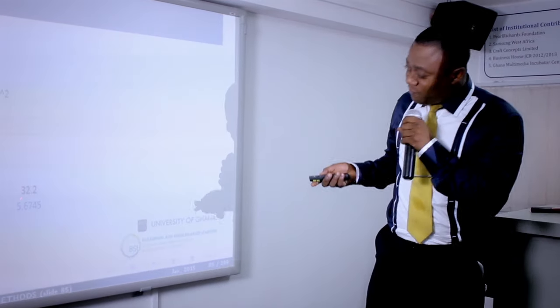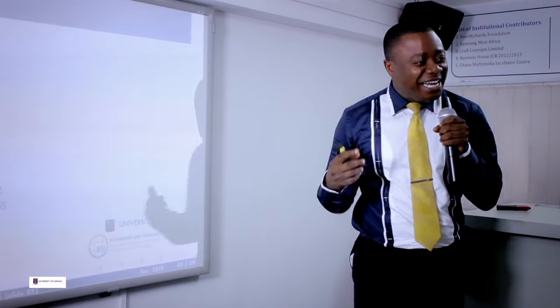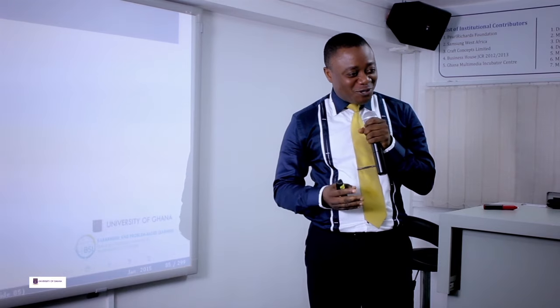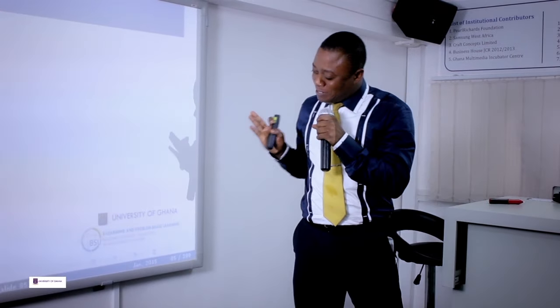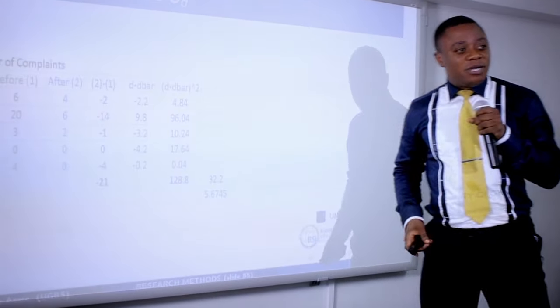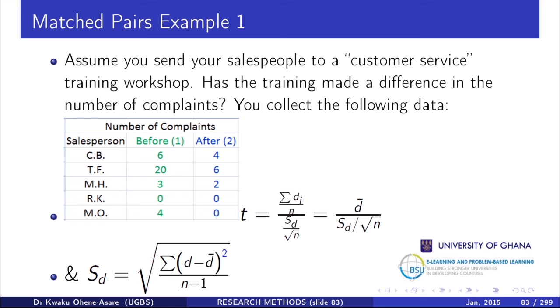The standard deviation is 5.67. When you get the right value in an exam and everything flows smoothly, you smile at it. Now we have D-bar equals negative 4.2 and S_d equals 5.67, so we are ready to compute the full t-statistic.